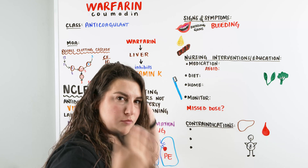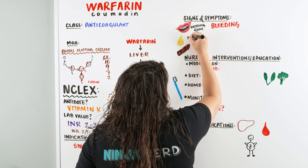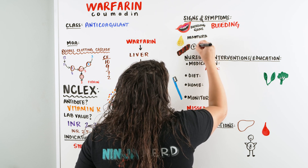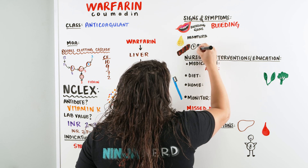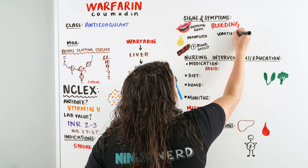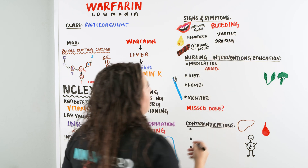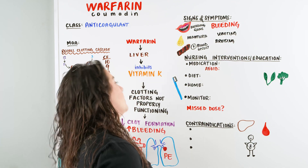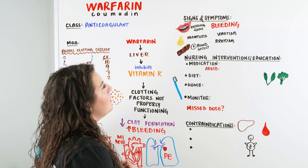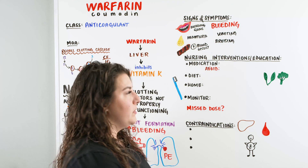Other signs of bleeding to watch for include hematuria — blood in the urine — a positive occult blood in the stool, vomiting blood, and significant bruising that just doesn't stop. We also want to watch for stomach pain or chest pain, which are signs that the patient may be bleeding internally in areas we can't yet see, and interventions are needed.